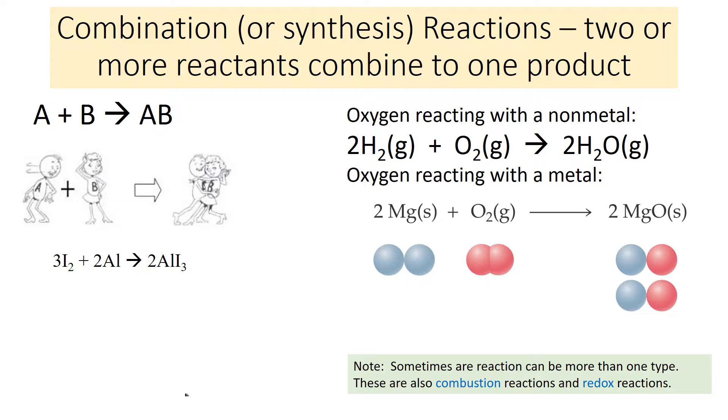Let's look at combination or synthesis. So that's when two or more reactants combine to form one product. So you can see that in A plus B makes AB. So you end up with one product. And you can see the little cartoon how the two people got together.